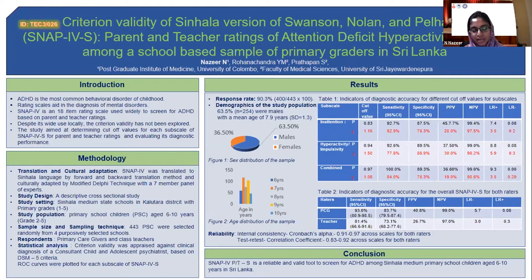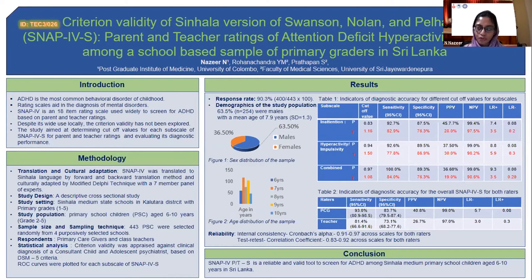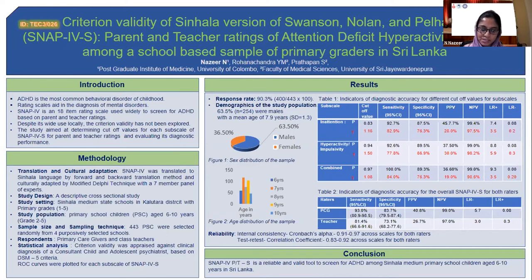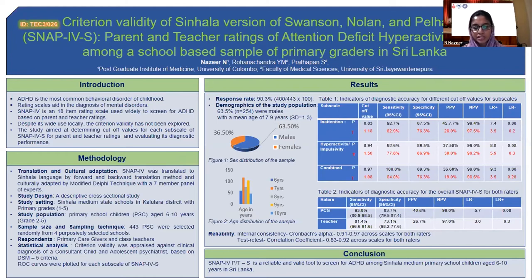Thereafter, a descriptive cross-sectional study was conducted among 400 primary school children aged 6 to 10 years, selected randomly from four purposely selected Sinhala-medium state schools in the Kurunegala district. Primary caregivers and teachers of the index child served as respondents.